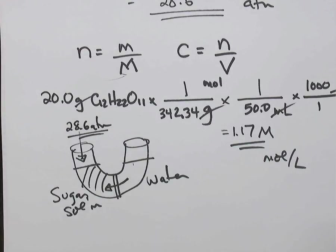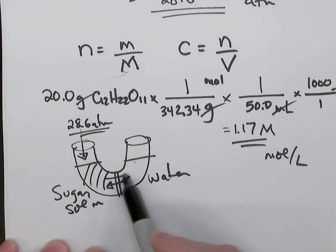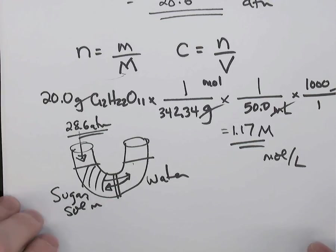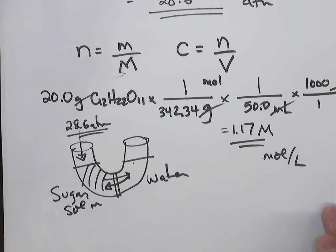What our answer says is that if we were to apply 28.6 atmospheres of pressure, we would be able to prevent that osmosis from happening. If we were to apply a greater pressure than that, then we could actually do what's called reverse osmosis. We could force the water back from the sugar solution into the pure water portion, and that's one way of purifying drinking water by doing what's called reverse osmosis.